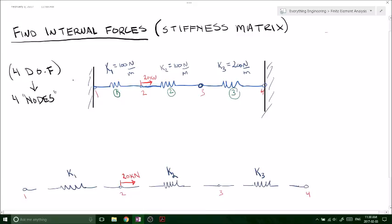All of this is given here. We've got four nodes, one, two, three, four, so that gives us four degrees of freedom. We have three different elements, three different springs: k1 equals 100 newtons per meter, k2 equals 100 as well, and k3 equals 200. We've got an external applied force of 20 kilonewtons at node number two.